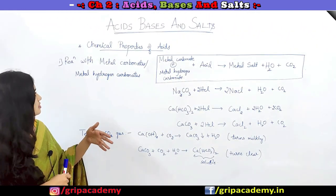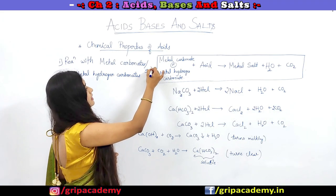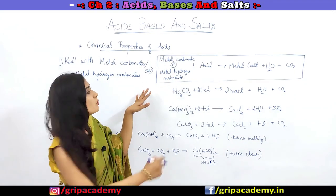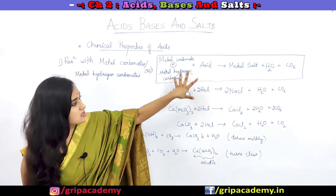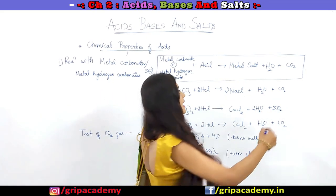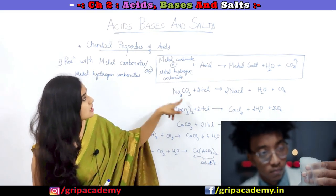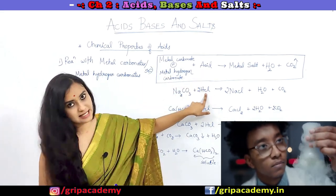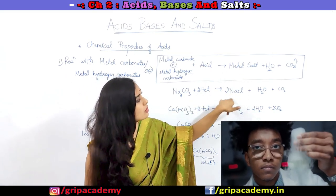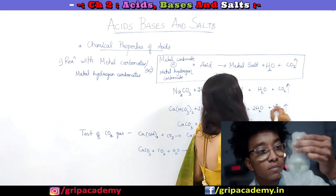Now let us discuss how metal carbonates or metal hydrogen carbonates react with acids. When a metal carbonate or metal hydrogen carbonate reacts with an acid, it produces the respective metal salt along with the production of water as well as carbon dioxide gas. For example, when sodium carbonate reacts with HCl, it produces sodium chloride as the metal salt, along with the formation of water and carbon dioxide. The carbon dioxide will be released in gaseous state.